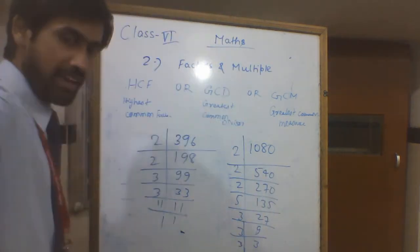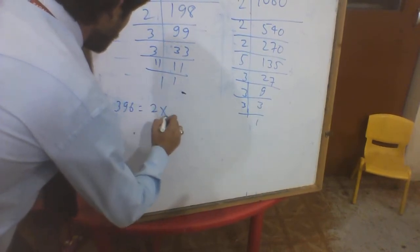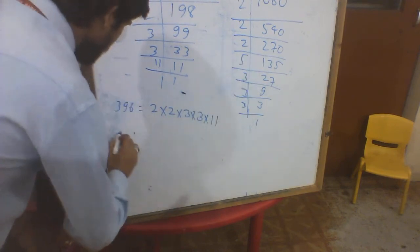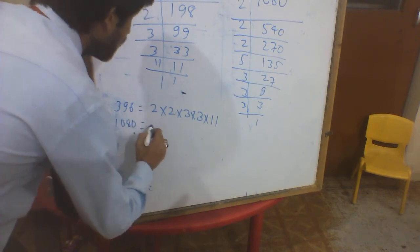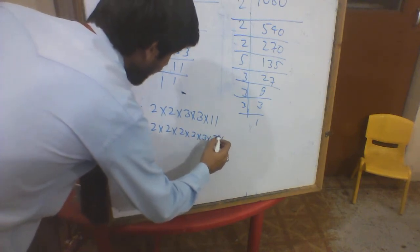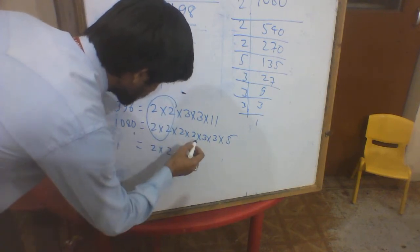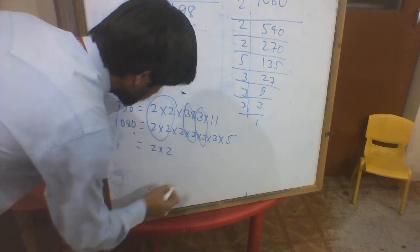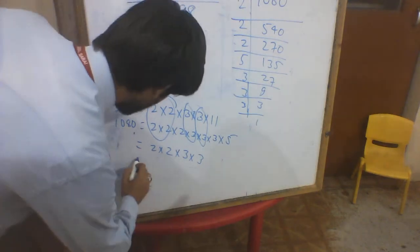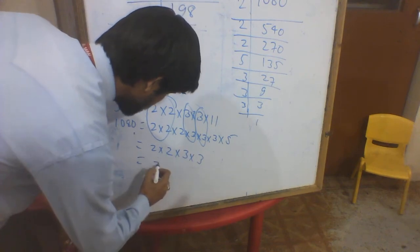The common factors are: 2 is common, 3 is common, and 3 is common again. So 2 times 3 is 6, times 3 is 18, times 2 is 36. So the HCF is 36. The prime factors 2 and 3 are common across all three numbers. This is the prime factorization method.